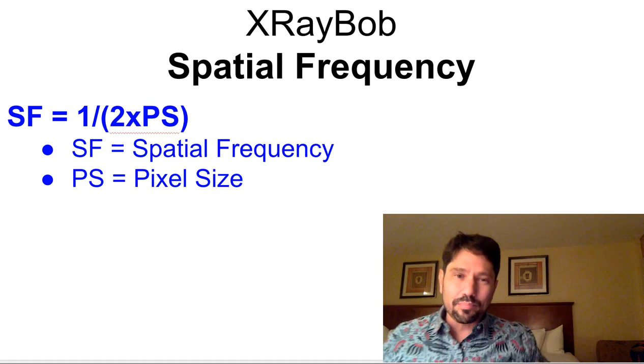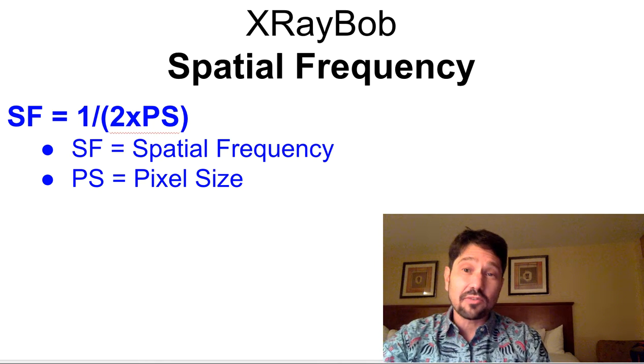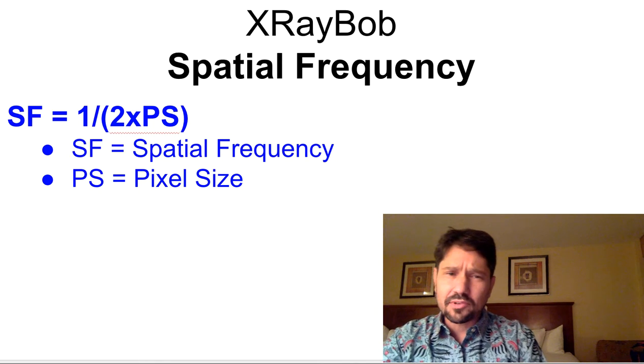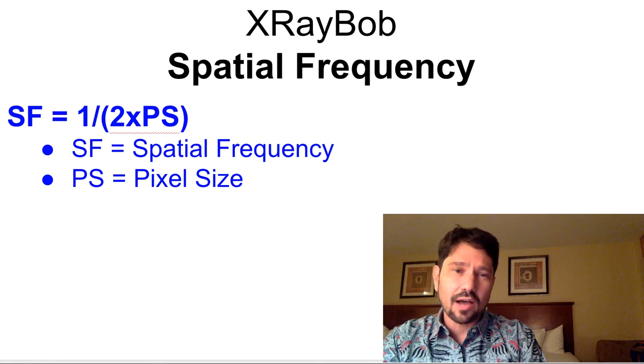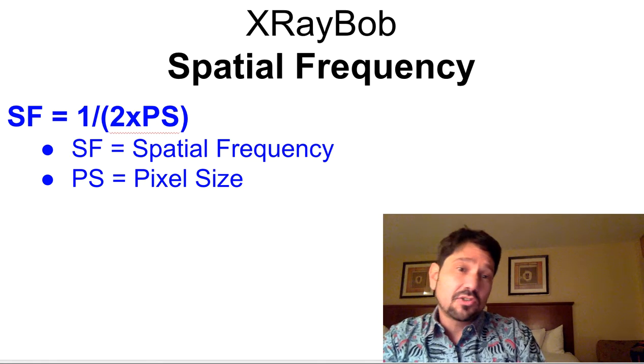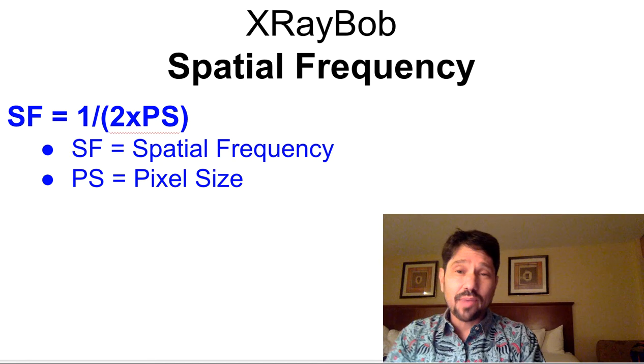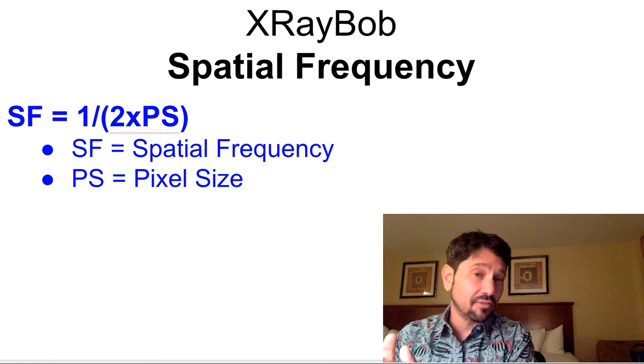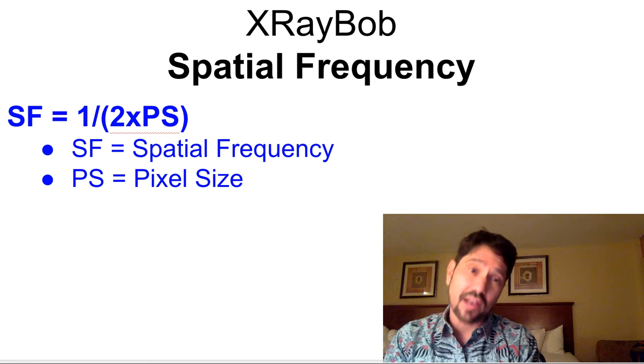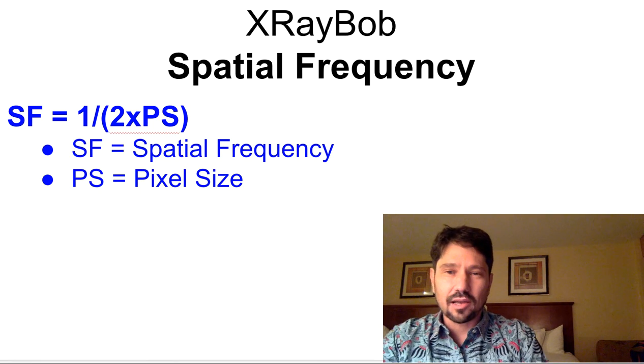All right, so the formulas you need to know. The first one you need to know is spatial frequency, SF, sometimes referred to as spatial resolution, equals 1 divided by 2 times the pixel size. And it's 2 times the pixel size because spatial frequency is expressed in line pairs. So there's a pixel for the line and a pixel for the knot line. So that's how we get to line pairs.